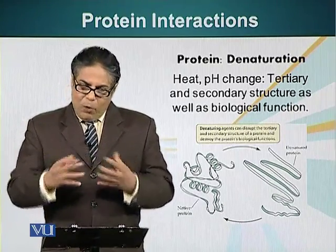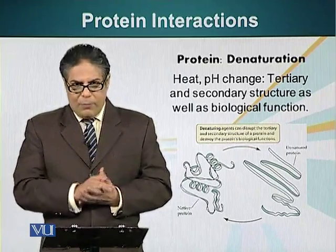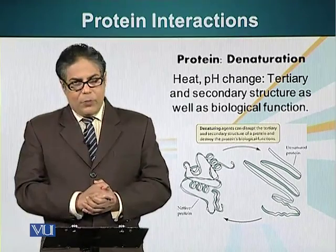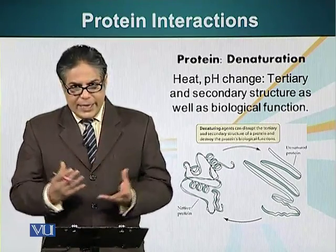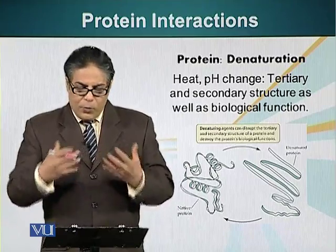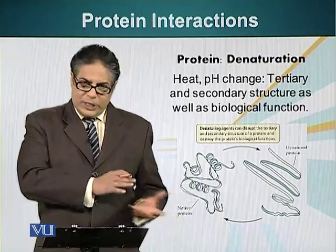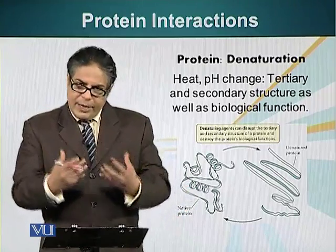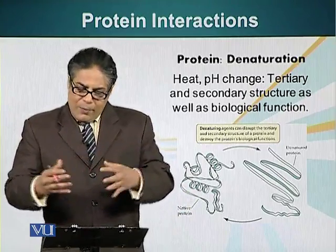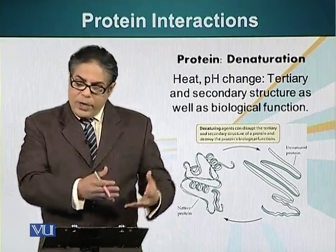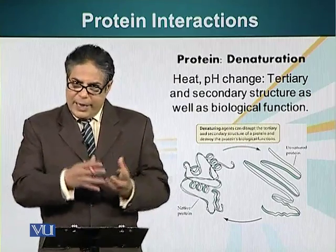The shape of a protein can be disrupted at extreme temperature. A very common practical example: when you boil an egg, the protein present in the egg denatures. If we heat the protein, we disrupt these weak interactions. And when the protein is allowed to cool down, they don't always form the same interactions.